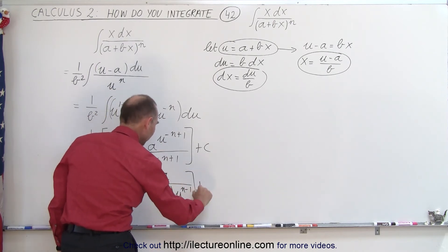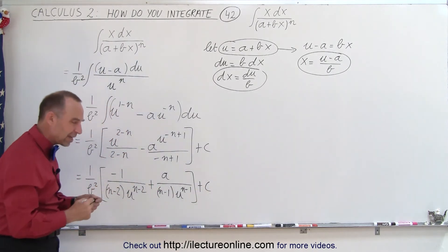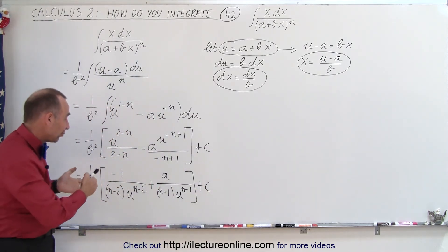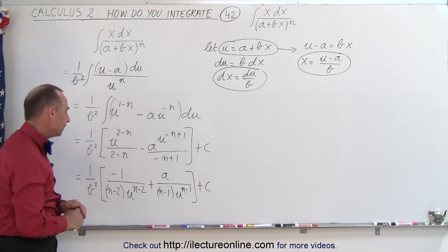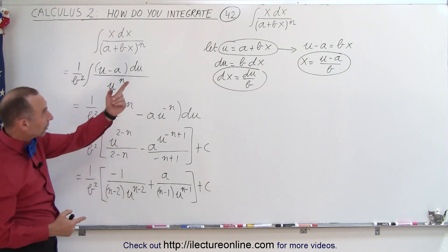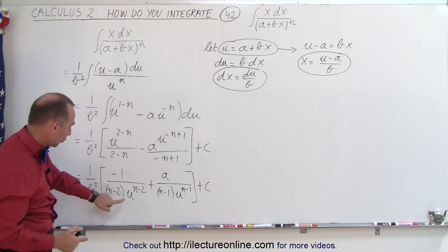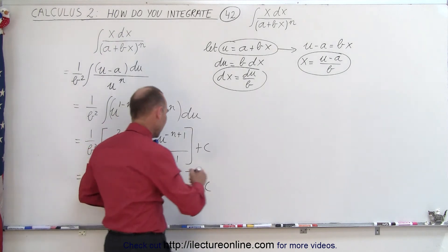And plus a constant of integration. So here it becomes more a matter of just writing it in a more standard form having the unknown n before the number and also here in the numerator. So now that we've done that we can then substitute back in what u is equal to and we get the following.